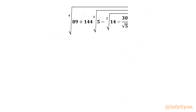Welcome back to Infigyan, my dear friends. In this video we are going to take up one very interesting question from Radical Mathematics. We have to simplify the fourth root of 89 plus 144 times the cube root of 5 minus the square root of 14 minus 30 over square root 5. Let us get started by writing this expression equal to E.